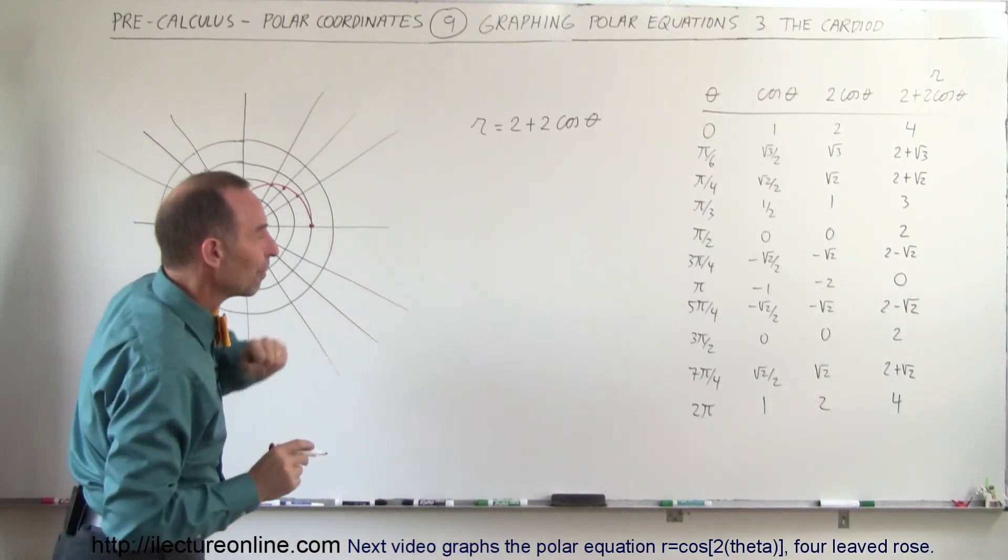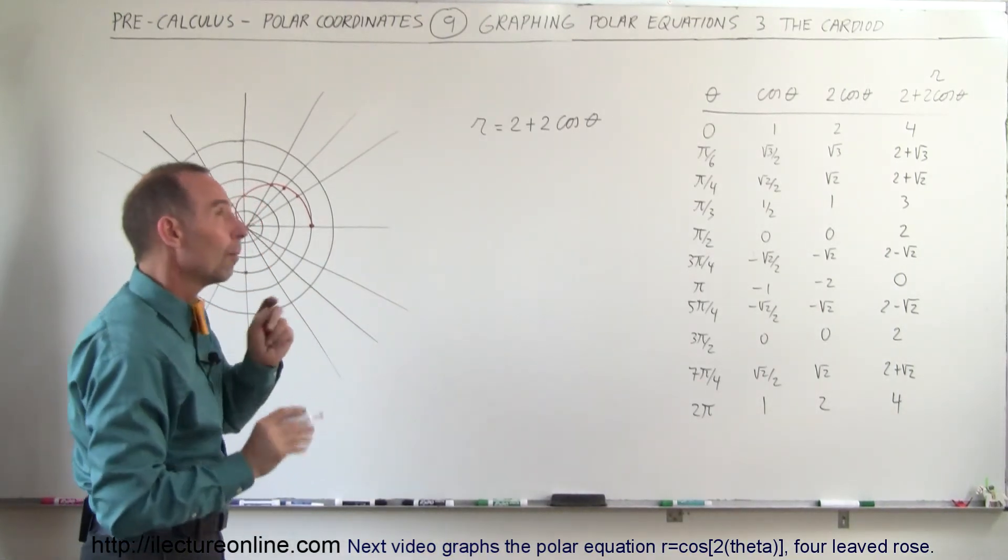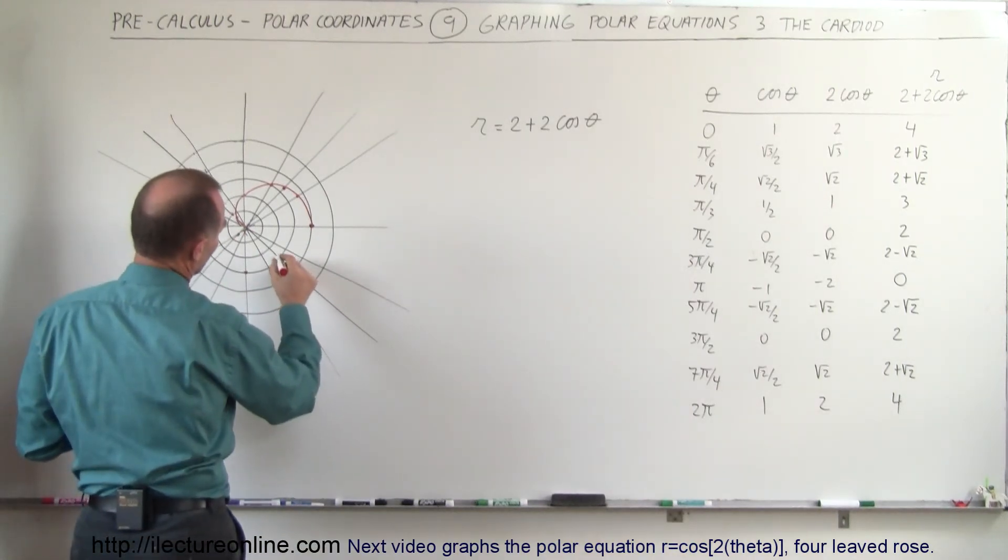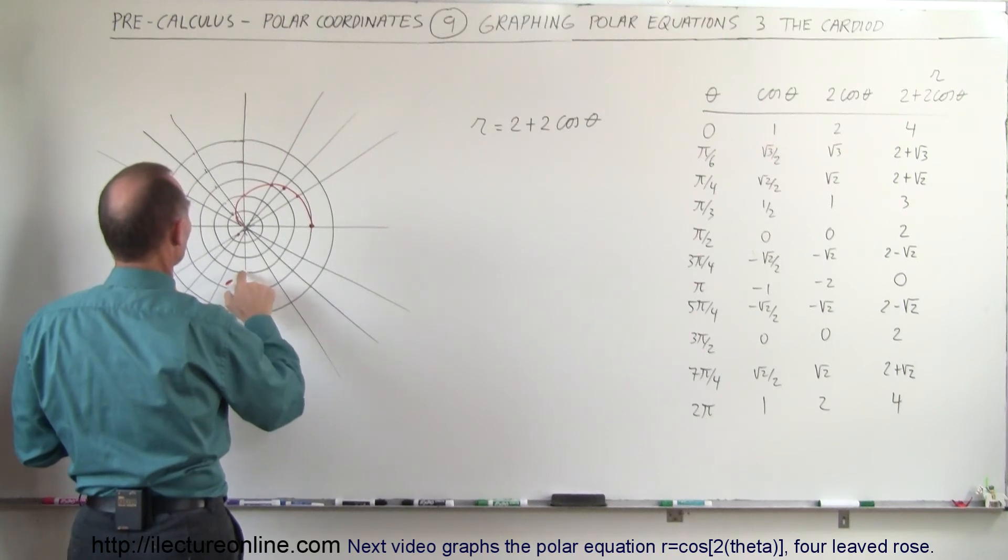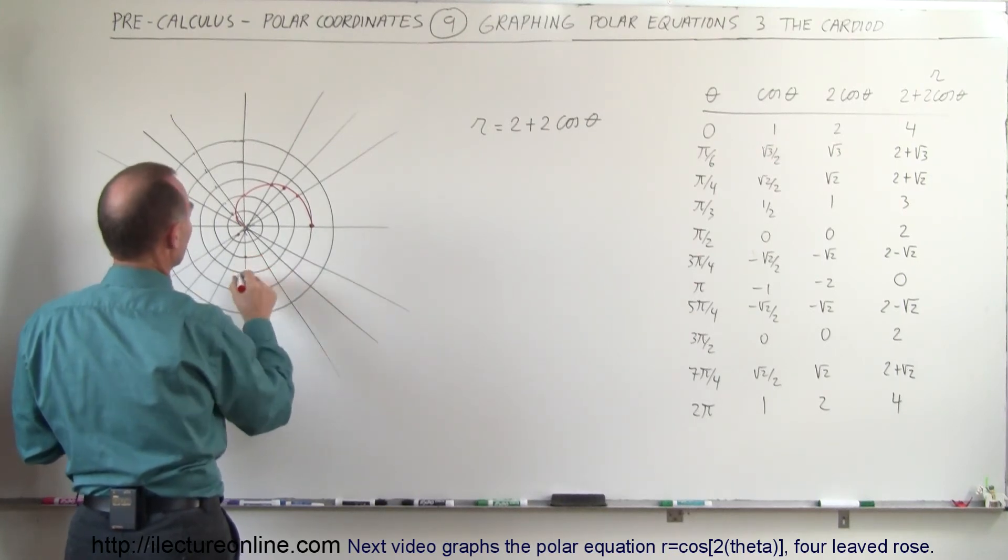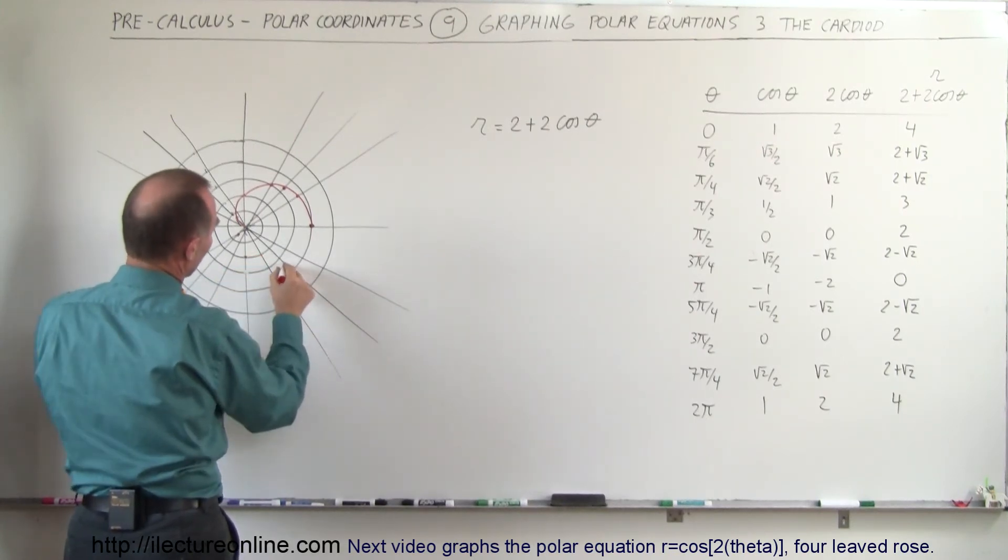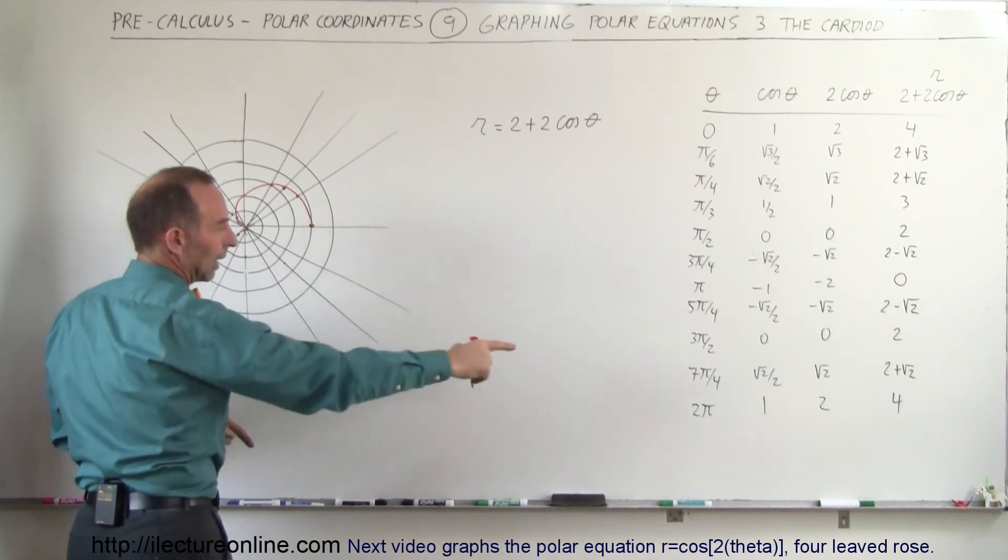And then at 7π over 4, we're 2 plus about 1.4, about 3.4. So we're at 1, 2, 3. Oh, I'm one too far. This is 3. I want to go up to 2. Now 3.4, that would be about there. And then we come back and back to 4.